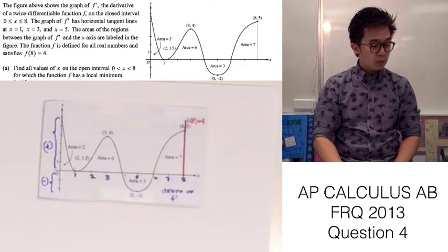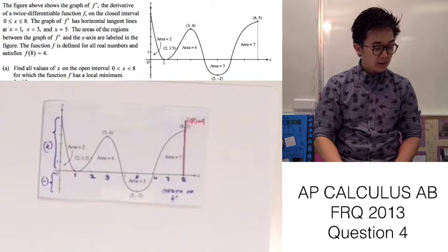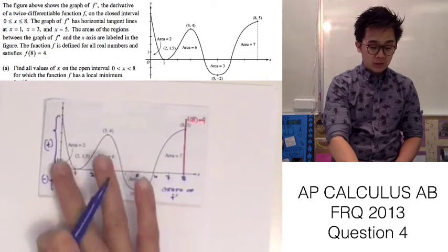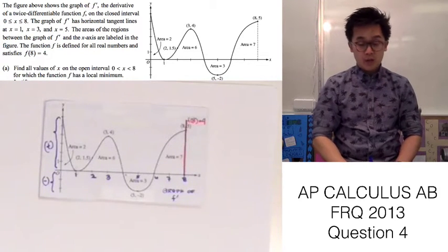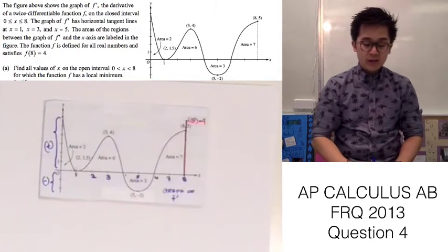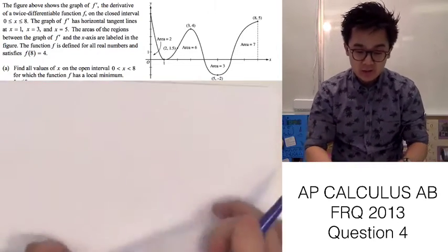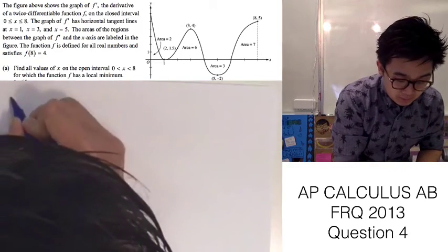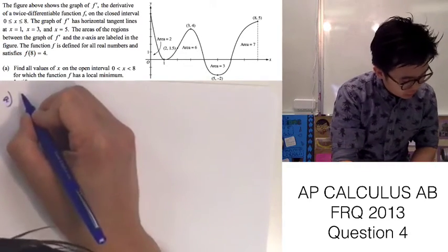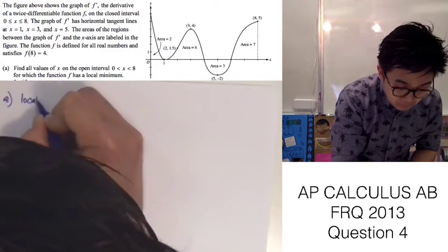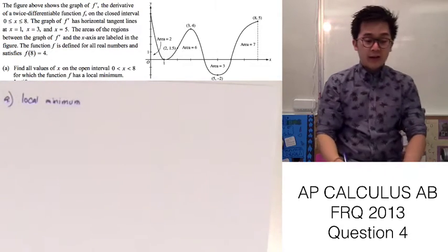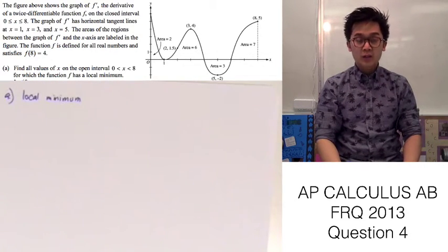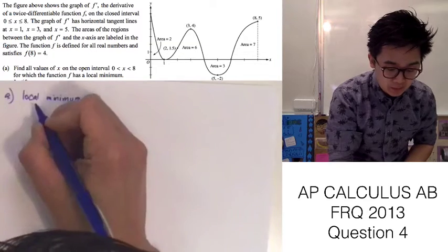Let's go ahead and answer problem letter A, which is to find all the values of x on the open interval from 0 to 8 where we need to find the local minimum of the function f given the graph of f prime. For letter A we are supposed to find the local minimum. The local minimum of the function occurs at the critical point, and in this case we know that the local minimum exists.